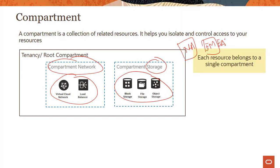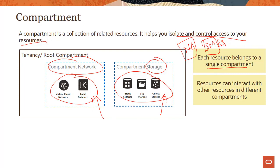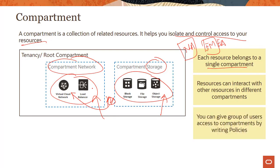Compartments help you isolate and control access to your resources. Each resource belongs to a single compartment, but resources can interact with resources in different compartments — for example, a compute instance can use a virtual cloud network in another compartment. You can give groups of users access to compartments by writing policies. Your root compartment, also called your tenancy, can hold all cloud resources. Best practice is to create dedicated compartments to isolate your resources.